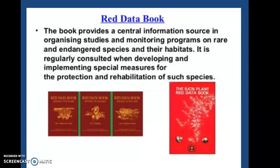The next topic is the Red Data Book. The Red Data Book provides a central information source for organizing studies and monitoring programs on rare and endangered species and their habitats. It is regularly consulted when developing and implementing special measures for the protection and rehabilitation of such species. There are different Red Data Books for plants, animals, and other species. It is published in many countries, and through this book, IUCN (now WCU) is trying to create awareness about endangered species.